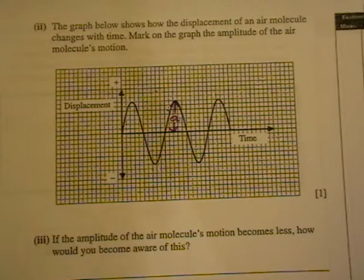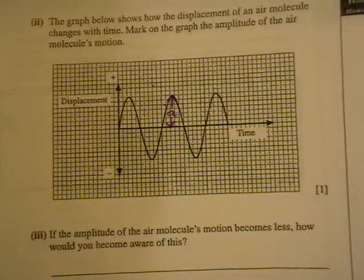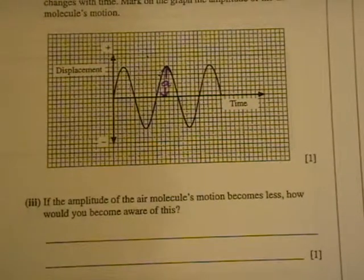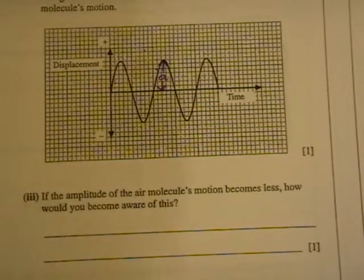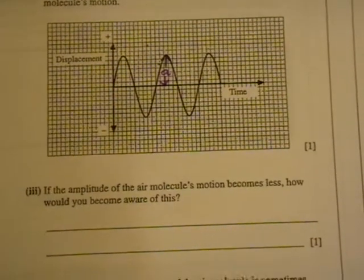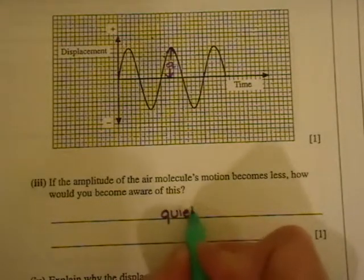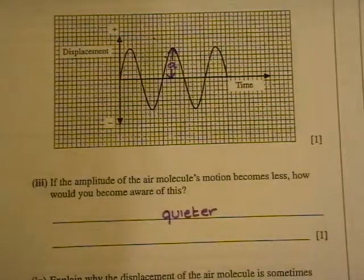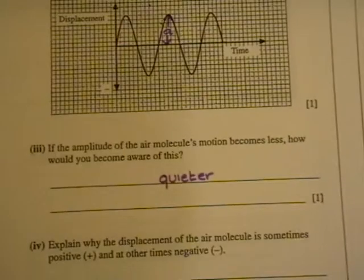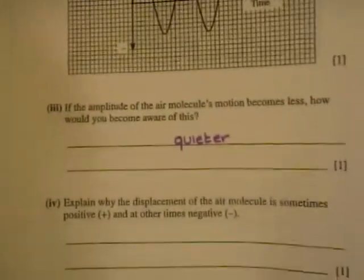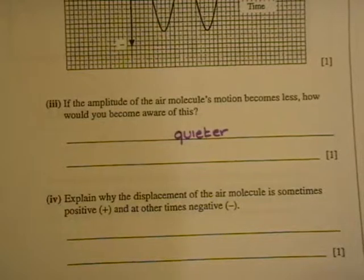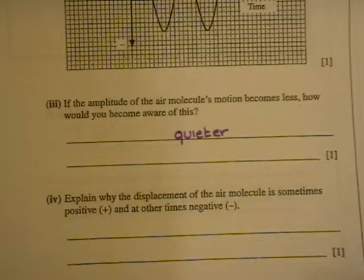If the amplitude of the air molecules motion is less, how would you become aware of this? And because it's an air molecule vibrating, that means that you're hearing sound. So it would be quieter. If the amplitude is less, the sound is quieter.